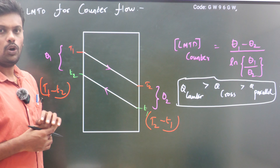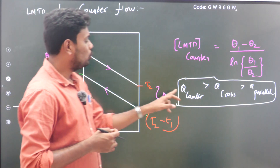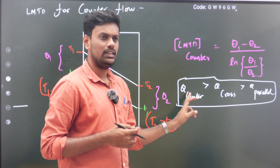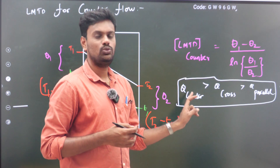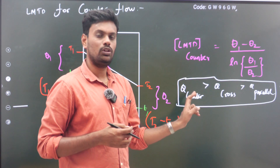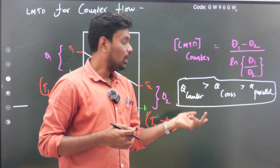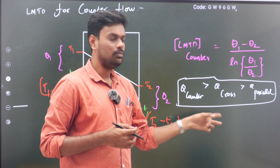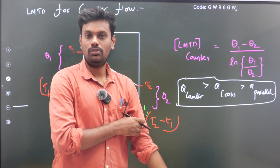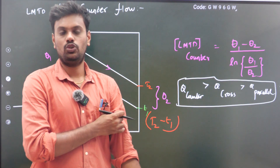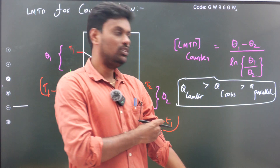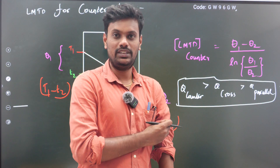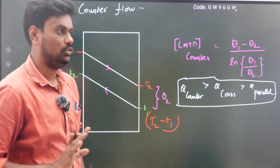This is the formula for a counter flow heat exchanger. Heat transfer in a counter flow heat exchanger is always higher, then cross flow, then parallel flow. So for better heat transfer we always choose a counter flow heat exchanger.